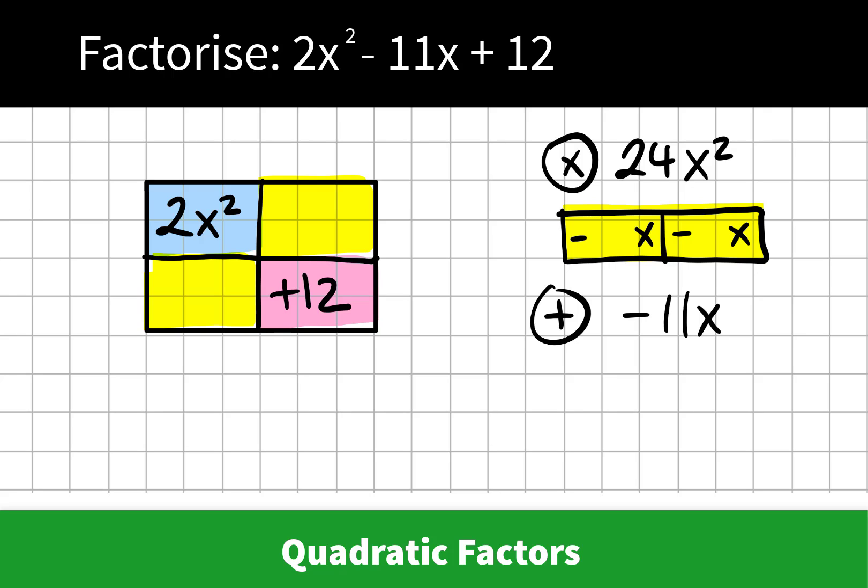So we're thinking of factors of 24x squared, and we might go negative 1x by negative 24x. That won't work. Then we think negative 2 by negative 12x, and that's not going to work. Then we think negative 3 by negative 8x, and we see that this multiplies to 24x squared while adding to negative 11x. So this is the correct answer.